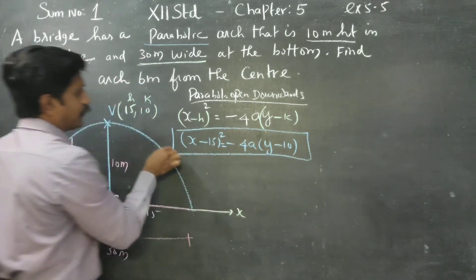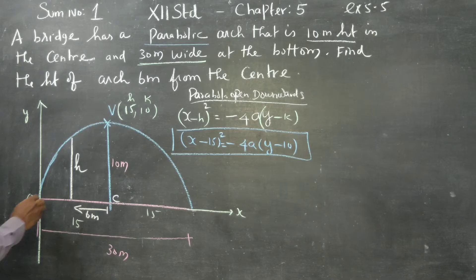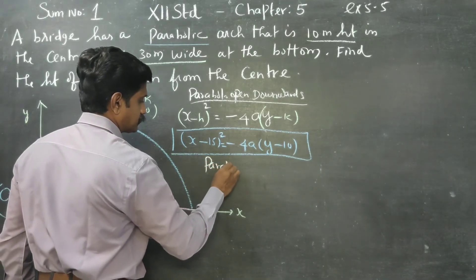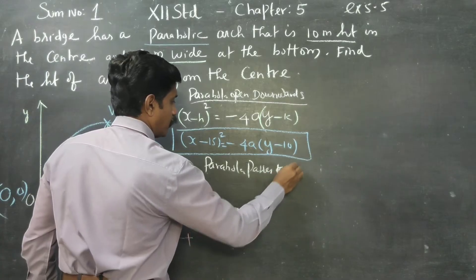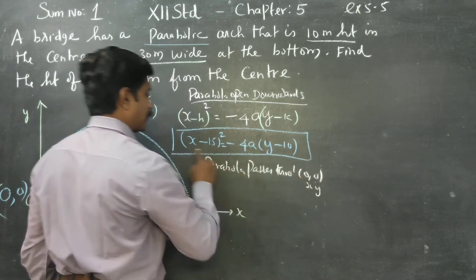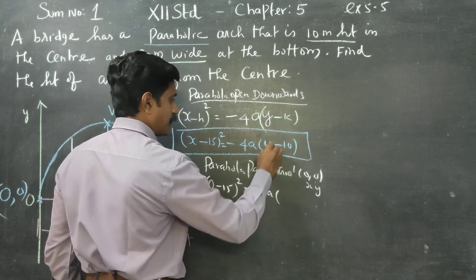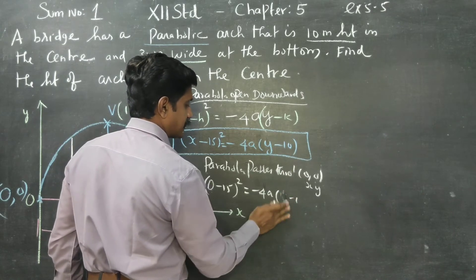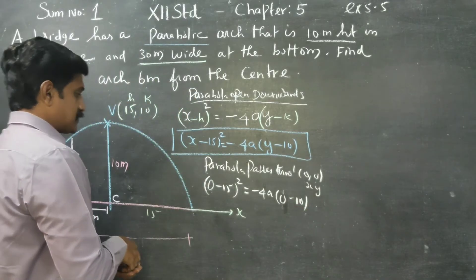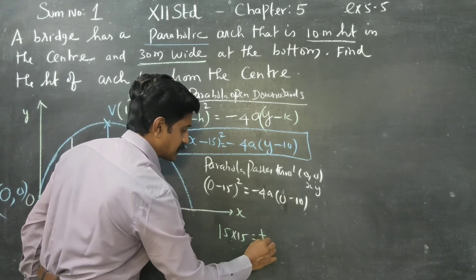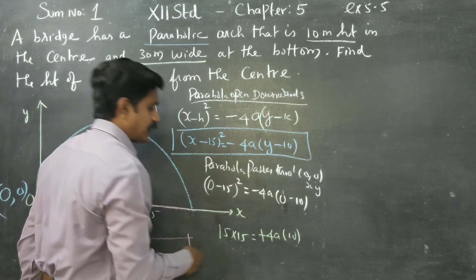This is my equation of the parabola. The parabola passes through the origin (0, 0). We substitute x=0 and y=0 into the equation: 0 minus 15 squared equals minus 4A times 0 minus 10.